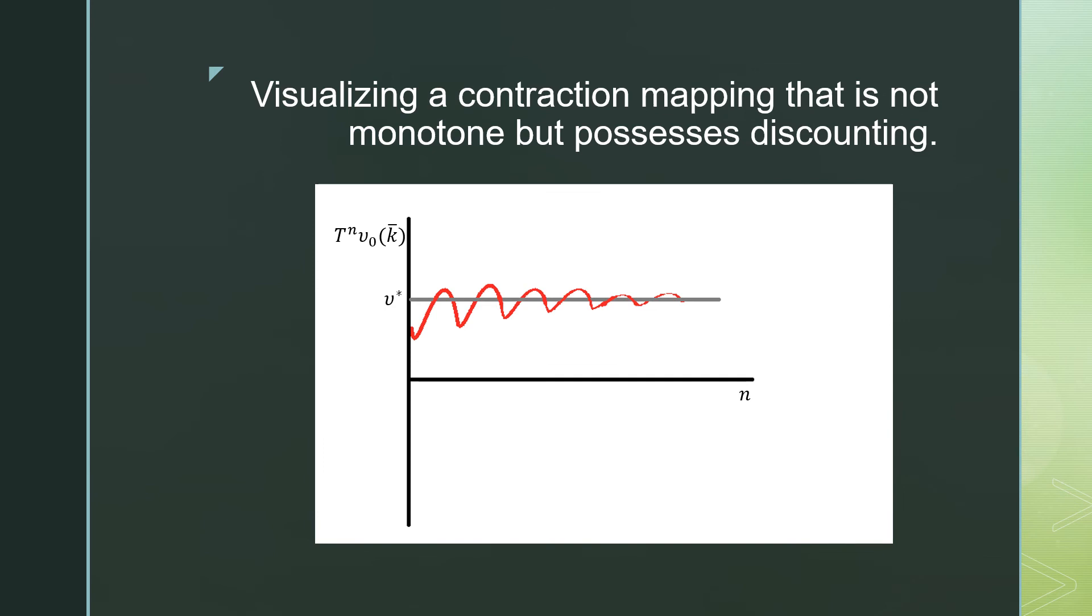In terms of visualizing a contraction mapping that is not monotone but possesses discounting, we can have something like this little curly guy here, where clearly it's not monotone, but if we have convergence to a V here, which is what we want for a contraction mapping, it makes sense that this is a contraction mapping.